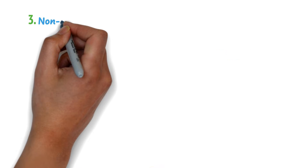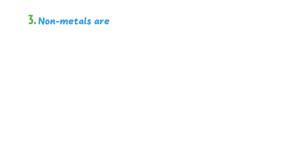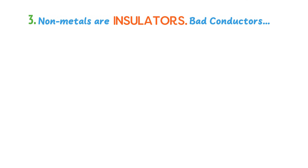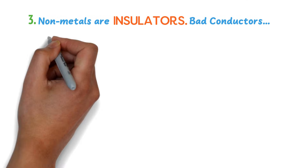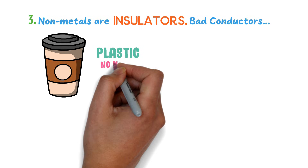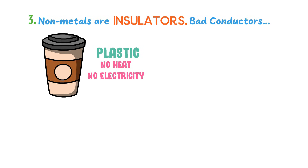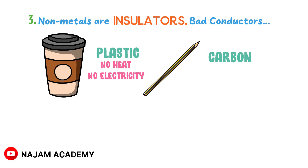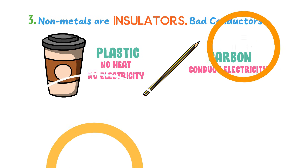Thirdly, non-metals are insulators or bad conductors of heat and electricity. For example, plastic is a non-metal — it doesn't conduct heat and electricity. But there are some exceptions; for example, carbon in the form of graphite or a pencil can conduct electricity.